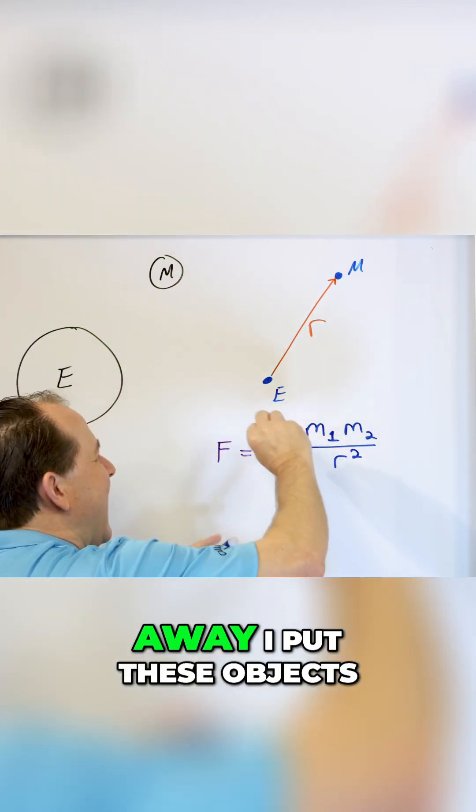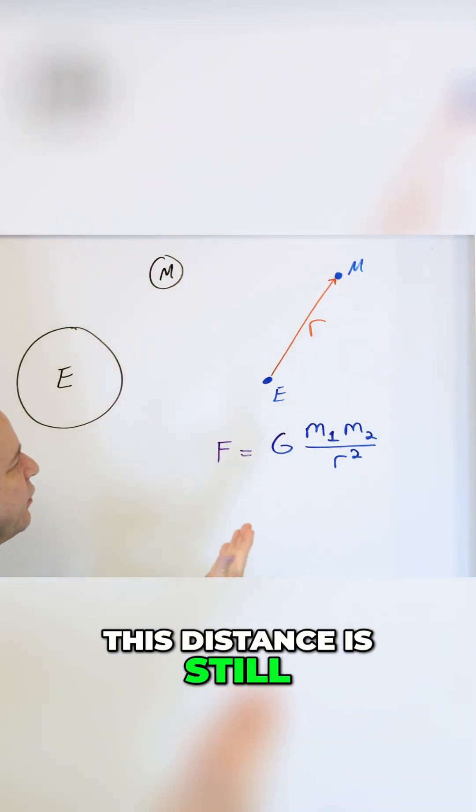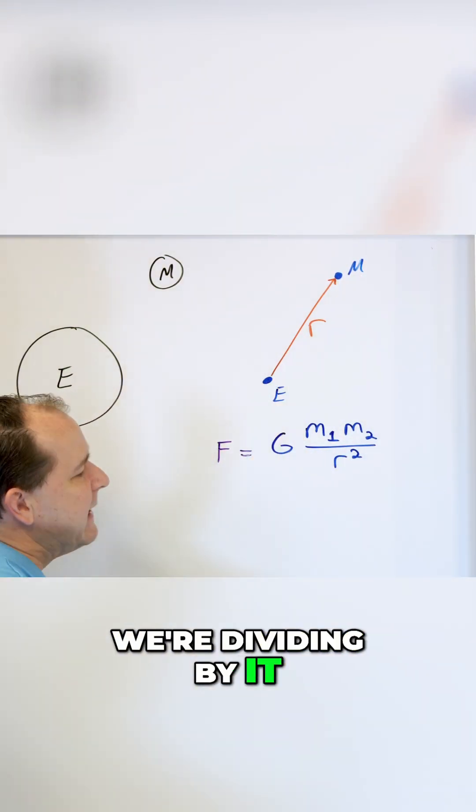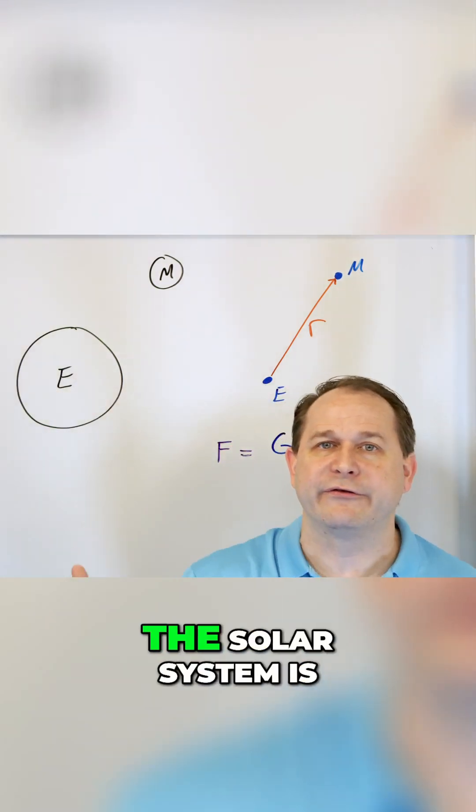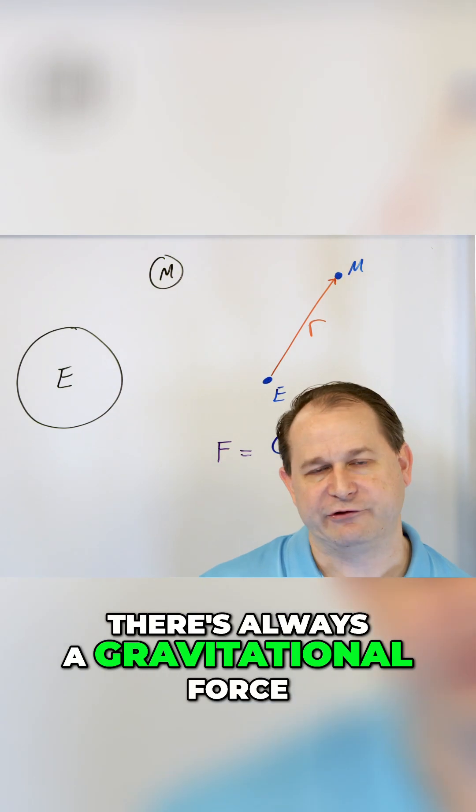Then, no matter how far away I put these objects, this radius or this distance is still going to be a number. We're dividing by it. So the force between any two bodies in the solar system is always positive. There's always a gravitational force.